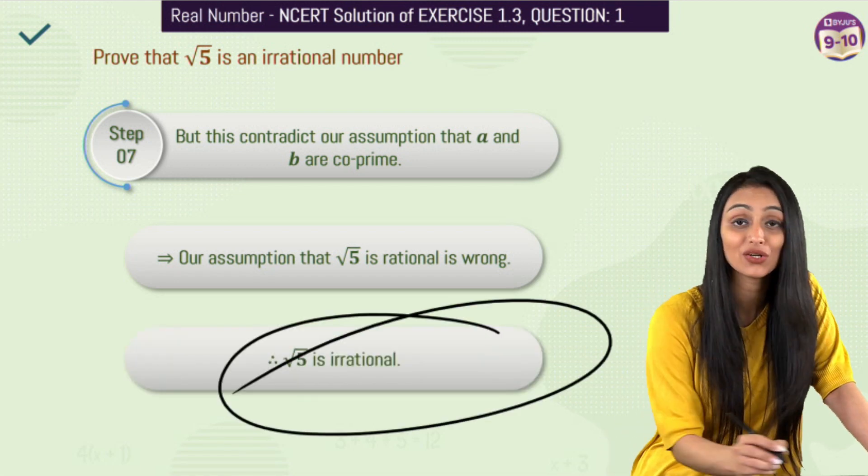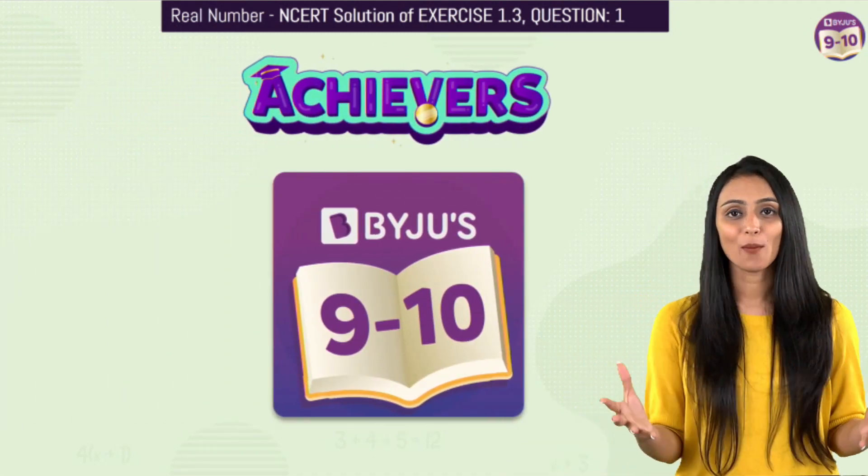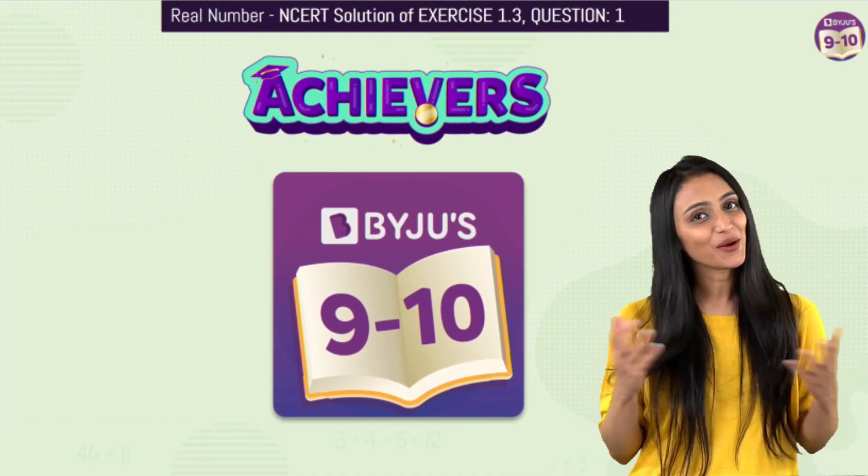Hence, we would say that root 5 over here is irrational. Alright, so leave a comment for me in the comment section, how you like this video.